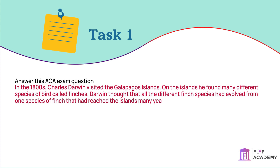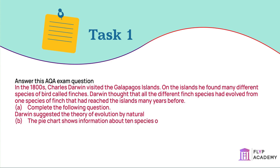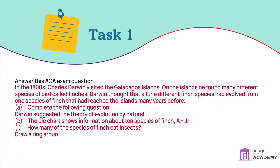A. Complete the following sentence: Darwin suggested the theory of evolution by natural ___. B. The pie chart shows information about 10 species of finch, A to J. Question 1: How many of the species of finch eat insects? Draw a ring around the correct answer. Question 2: Describe finch species G, using only information from the pie chart.